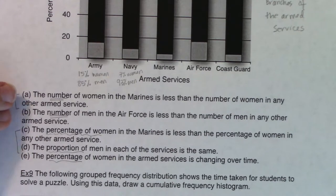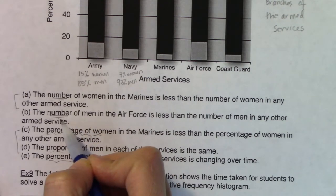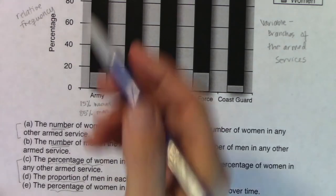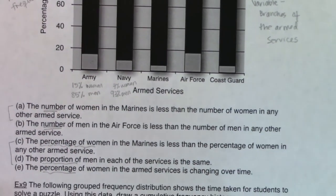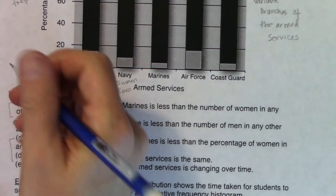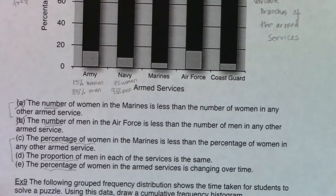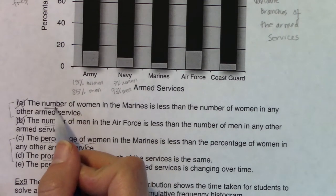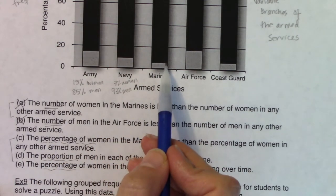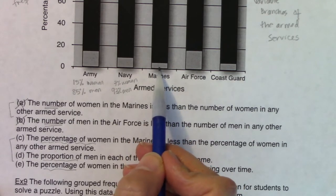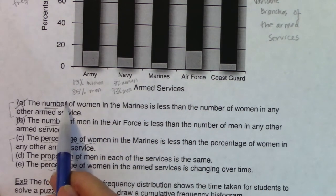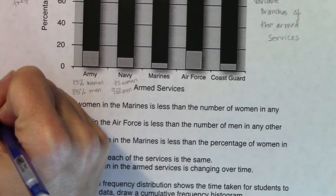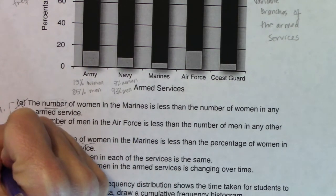Right out the gate, we can rule out A and B because they talk about frequencies, and we have no information on that. Our graph only has relative frequencies — percentages. So we don't know the number of women in the Marines or the number of men in the Air Force. When I used to give this on a quiz, A was the most commonly guessed wrong answer, because the women's segment for the Marines has the smallest bar. But be careful — look at that vocab term. A and B are frequencies; C, D, and E are relative frequencies.